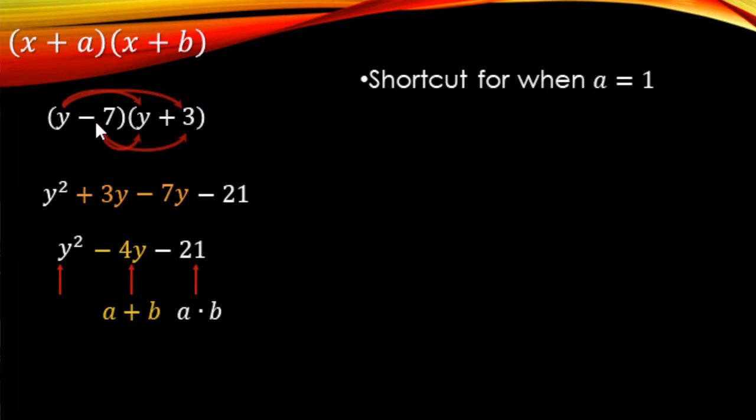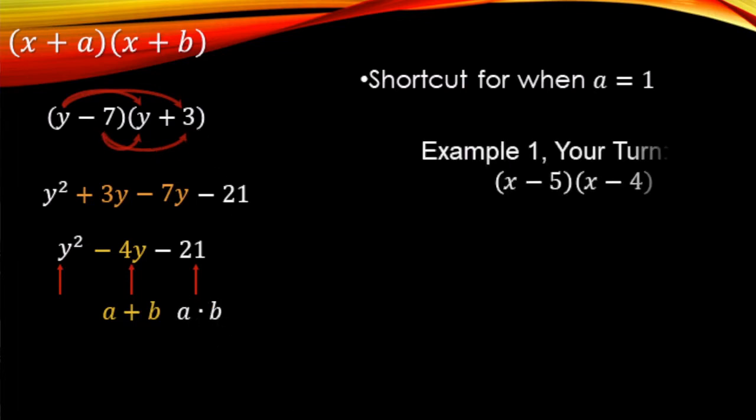So that's the negative 7 and the positive 3 being multiplied. Let's go ahead and have you try this one out — pause the video and then come back and see how you did.